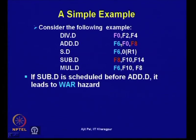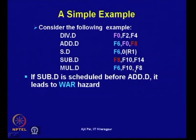There are also output dependences — for example, between divide-D and sub-D, both write to the same register. There are anti-dependences as well — between sub-D and mul-D. Apart from true data dependences, this program code has output dependences and name dependences.